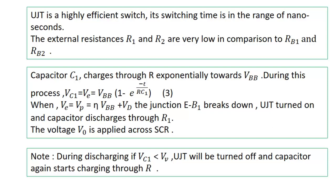During this process, VC1 = VE = VBB (1 - e^(-t/RC1)). You can get this expression by applying a DC excitation across simple RC series circuit. In this case, it is assumed that initial capacitor voltage is zero. So equation number 3 will give the capacitor voltage. Last class we discussed that VP = η VBB + VD.